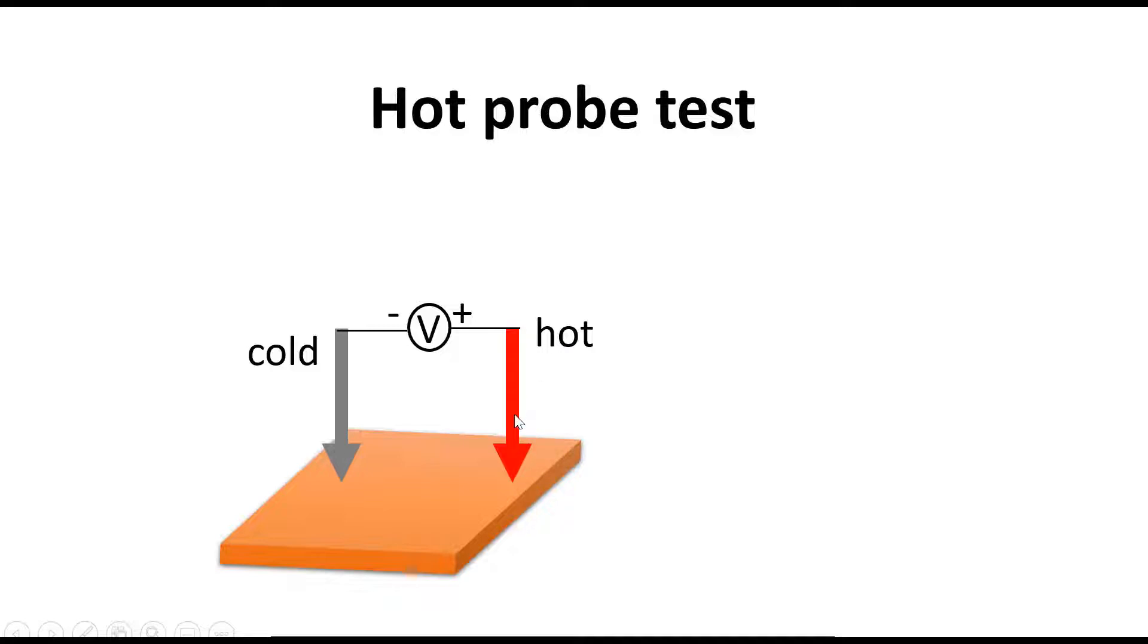This simple test will tell you whether the deposited film is P-type or N-type. The voltmeter reading will give either a positive or negative voltage when we have two different temperatures across the two probes.